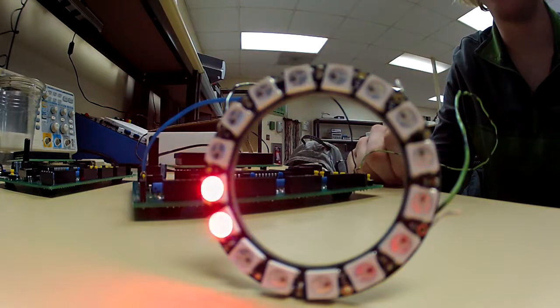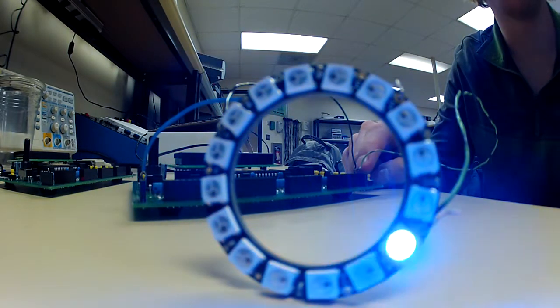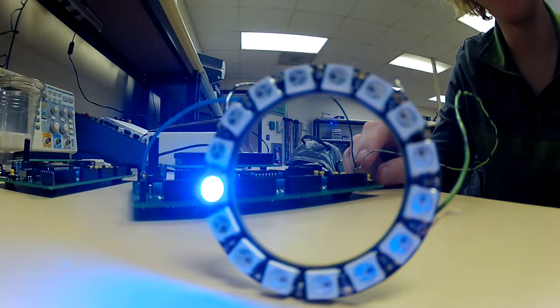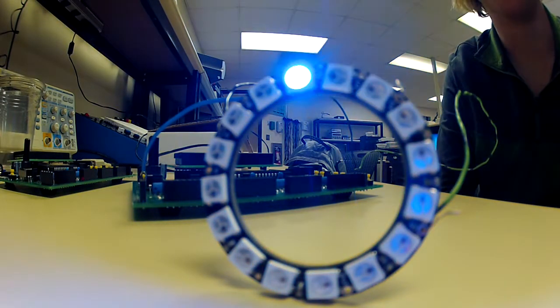When you press RB0, it starts going in a circle in red color. When you press RB1, it starts from whatever NeoPixel it's on and turns blue. It slows down incrementally after each NeoPixel by about 10 milliseconds.